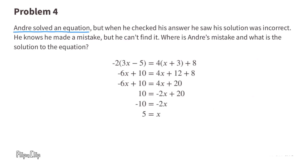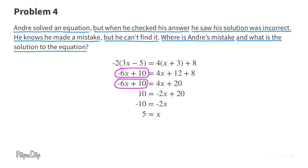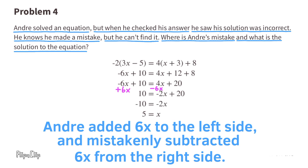Problem number 4: Andre solved an equation, but when he checked his answer, he saw the solution was incorrect. Where is Andre's mistake, and what is the solution to the equation? Negative 2 times 3x is negative 6x, and negative 2 times negative 5 is positive 10 — so far so good. 4 times x is 4x, and 4 times 3 is 12. Negative 6x plus 10 matches, and 12 plus 8 is 20. When adding 6x, on the left side he added 6x, but on the right side he subtracted 6x. Andre added 6x to the left side and mistakenly subtracted 6x from the right side.